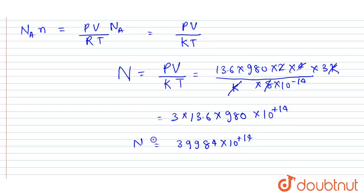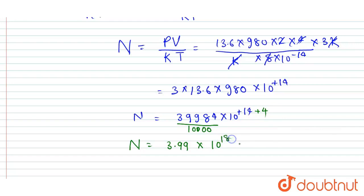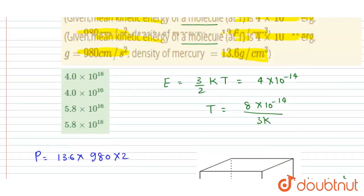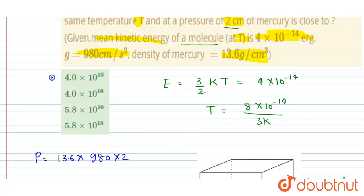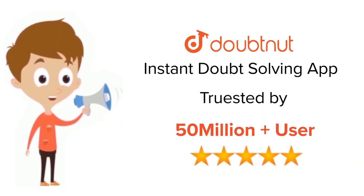After completing the calculation, we get the number of molecules equals approximately 3.99 × 10¹⁸, which is nearly equal to 4 × 10¹⁸. This is our answer and the correct option is A. For class 6th to 12th IIT-JEE and NEET level, trusted by more than 5 crore students — download the DoubtNut app today.